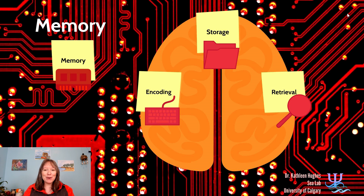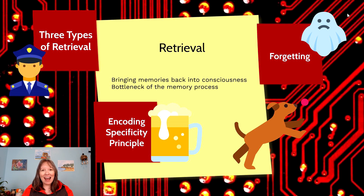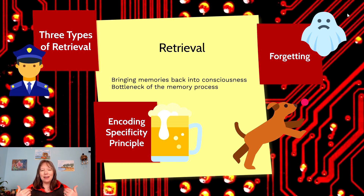Now that we've talked about both encoding and storage, we're going to launch into this third area of memory known as retrieval. Retrieval is a massive area of memory research because realistically the only way we can truly measure memory is through retrieval. It's hard to ask if somebody encoded or stored something without also asking if they can retrieve it. Retrieval is really the idea of bringing memories back into our consciousness — it represents the bottleneck of the memory process.